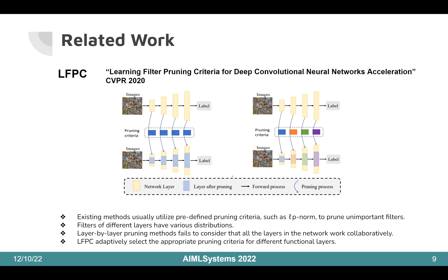The third one is LFPC, presented at CVPR 2020. Existing methods usually utilize predefined pruning criteria such as Lp norm to prune unimportant filters. There are two major limitations to these methods. First, previous methods fail to consider the variety of filter distributions across layers. To extract features from coarser to finer levels, filters of different layers have various distributions, so it is not suitable to use the same pruning criteria for different layers. Second, previous layer-by-layer pruning methods process each layer independently and sequentially, failing to consider that all layers collaboratively make the final prediction.